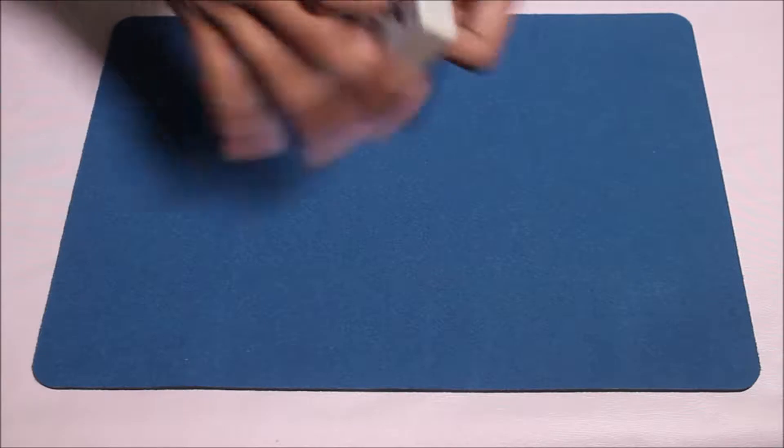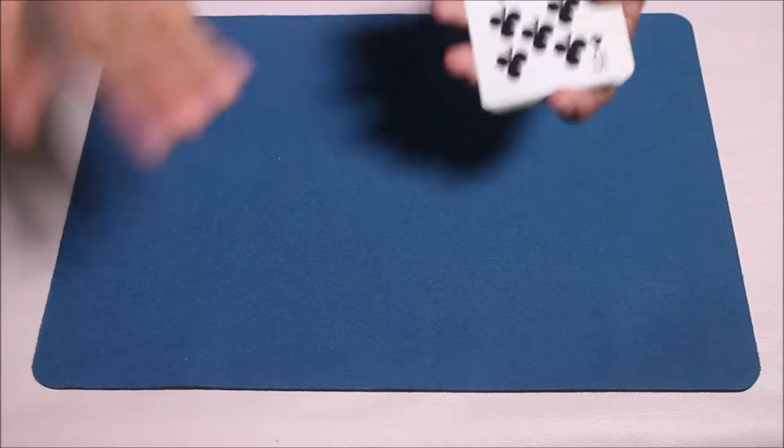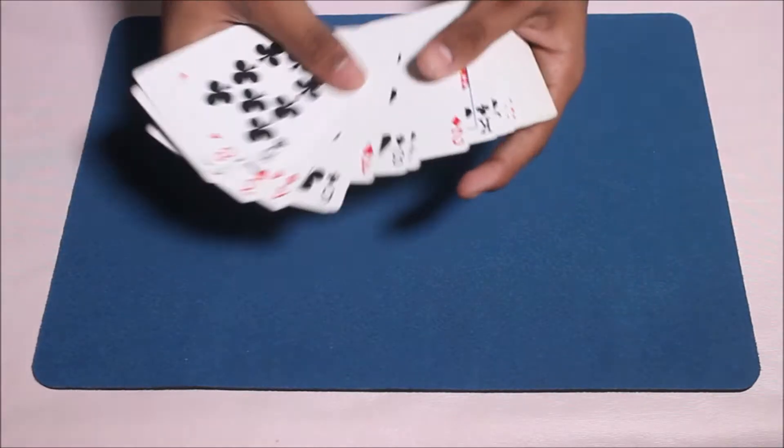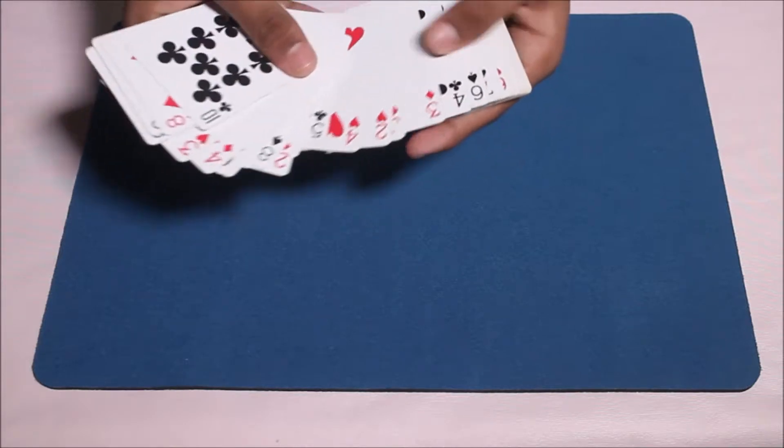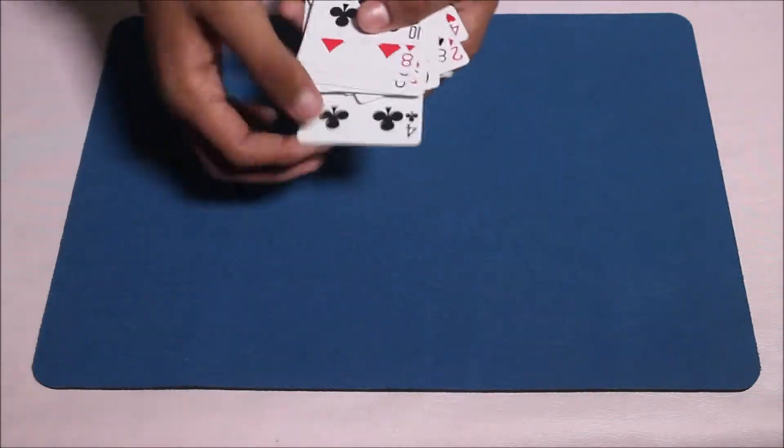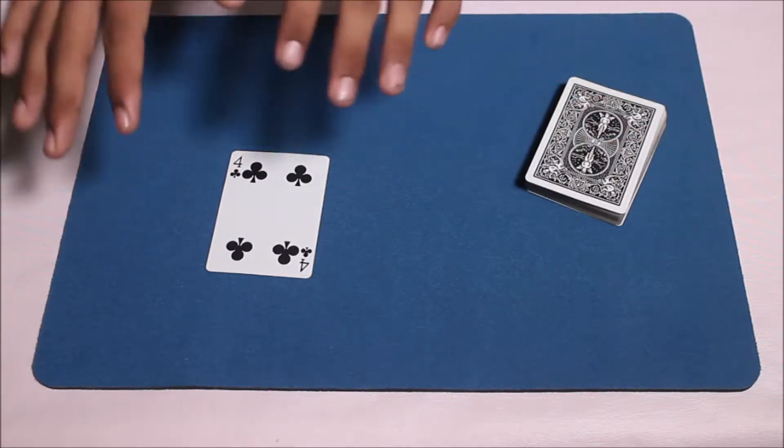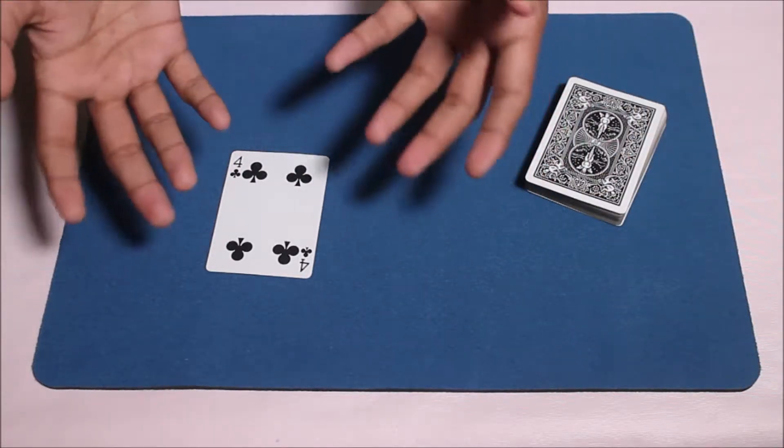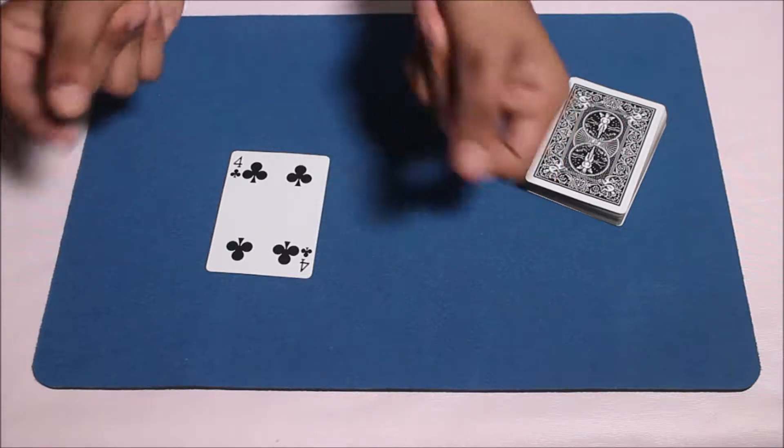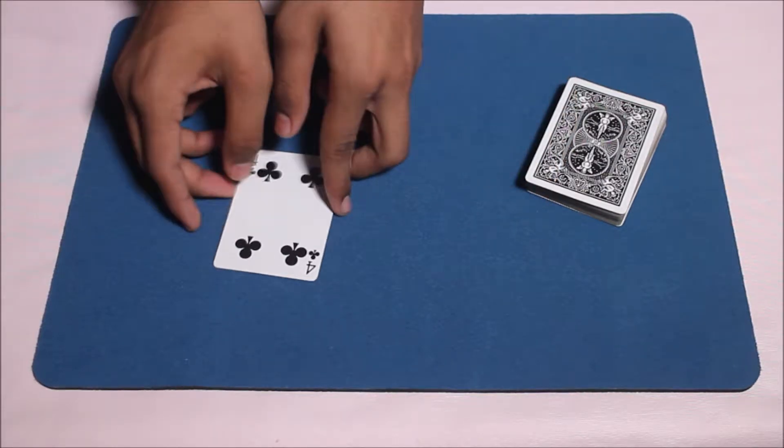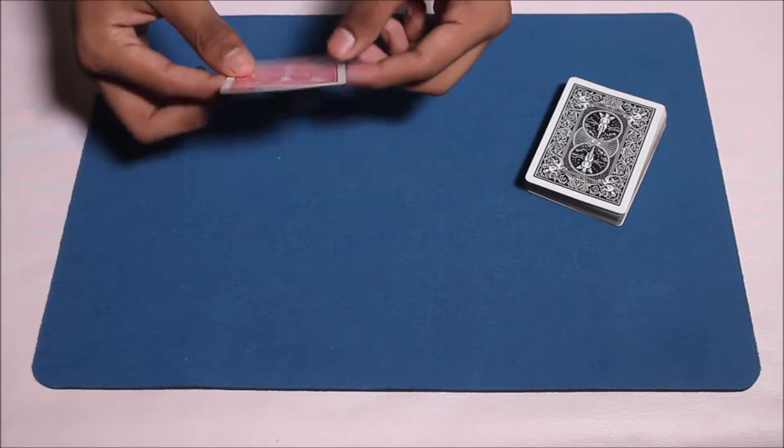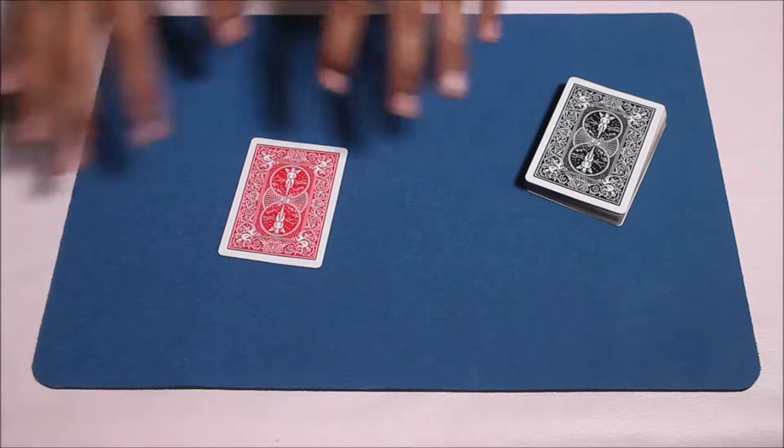Maybe one more shuffle just to make sure that all the cards are mixed up. Now I want the spectator to select any card face up, whatever they want. Let's say they pick the four of clubs, for example. They can pick any card. Now with the four of clubs they just selected, this is their selection. I'm gonna snap my fingers and that four of clubs is gonna change its color. That's a pretty cool trick.